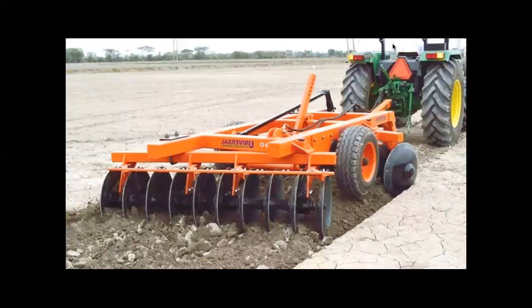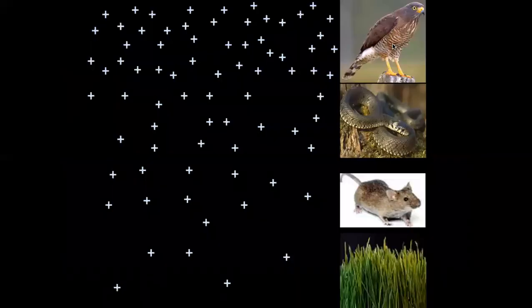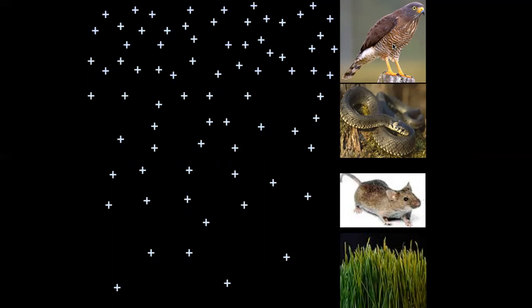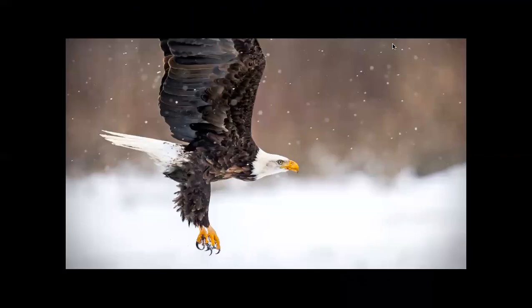Beyond development, another major threat to coastal prairie ecosystems is agriculture. Because the soils in the prairie contain lots of clay, they're very good for certain kinds of farming, such as rice farming. But the modern method of rice farming involves plowing the land, which destroys the prairie. Additionally, herbicides used on farms to prevent weeds from growing also prevent prairie plants from returning. Pesticides used in agriculture also cause problems — when they travel up the food chain, they multiply in concentration in a process known as biomagnification, which almost led to the extinction of the brown pelican, the bald eagle, and a few other bird species.